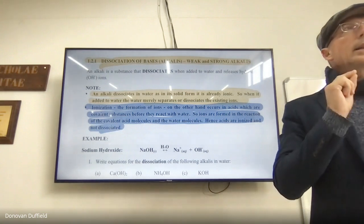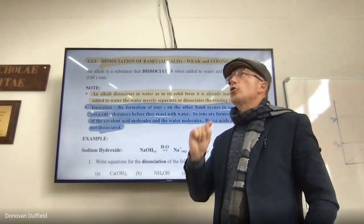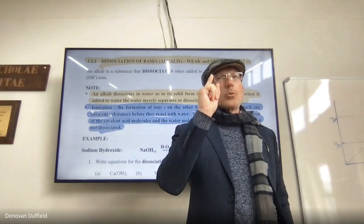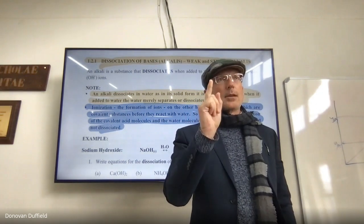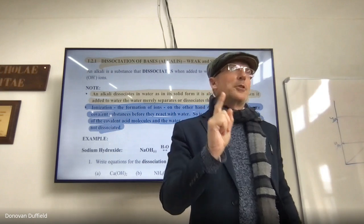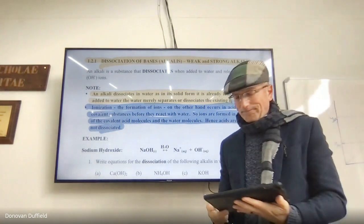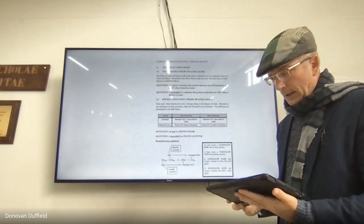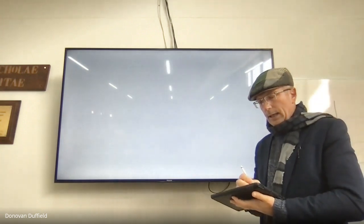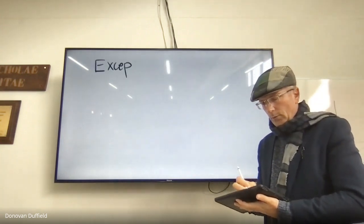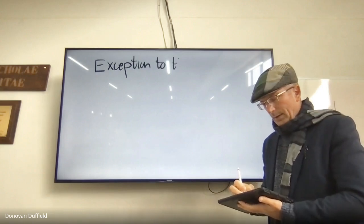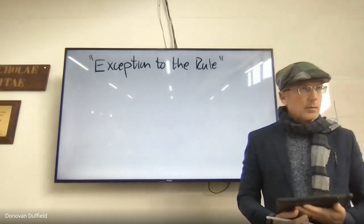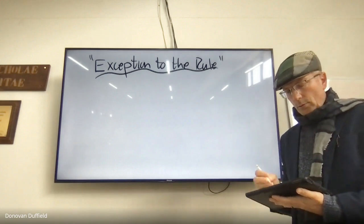There is one exception to the rule that bases dissociate. This used to frustrate me at university. The exception is ammonia, NH3. Ammonia is a molecule with covalent bonds — nitrogen and hydrogen are both non-metals — so it's non-ionic, unlike typical bases.